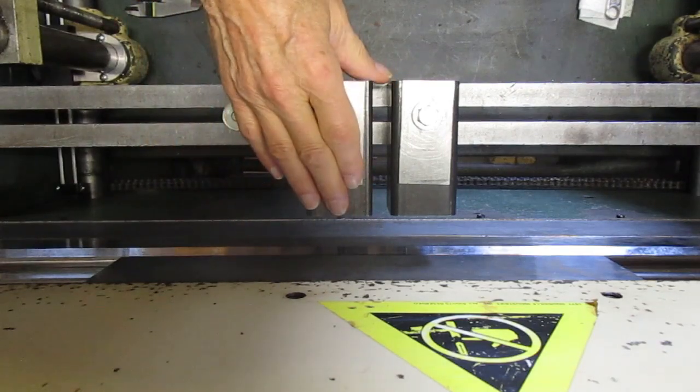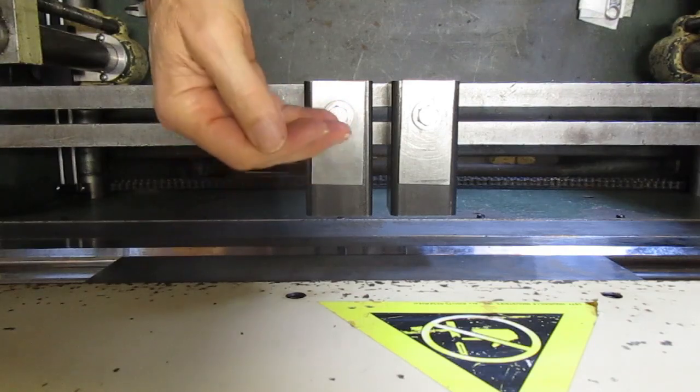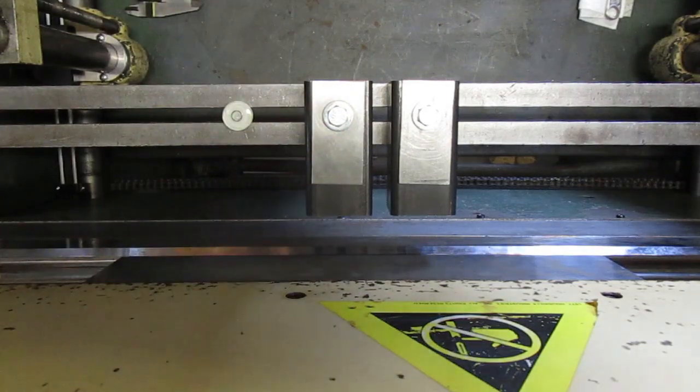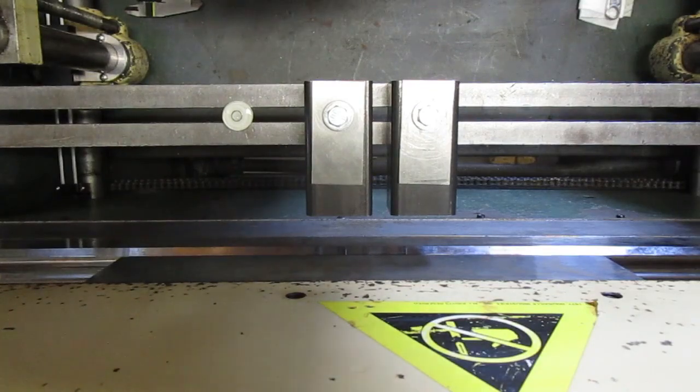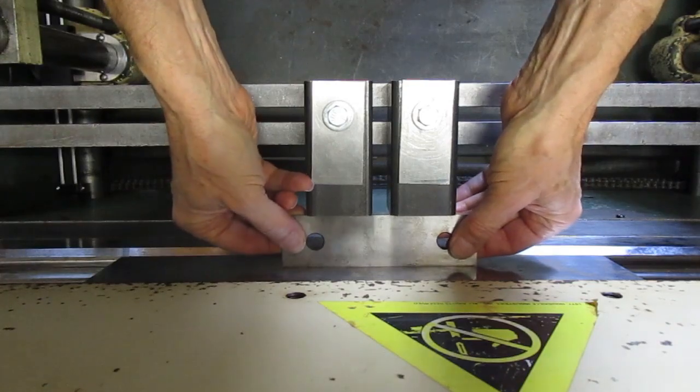So I registered my back gauge and I pulled it out 0.56 inches plus the distance of my precision parallel, which is an inch and five-eighths or 1.625. So I'll just go ahead and fit that in here kind of like a feeler gauge.